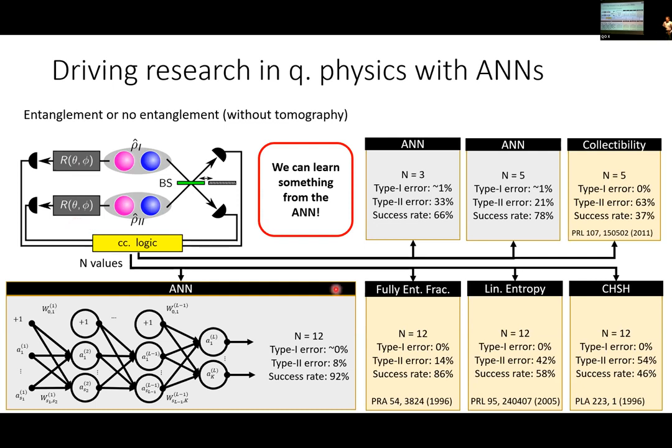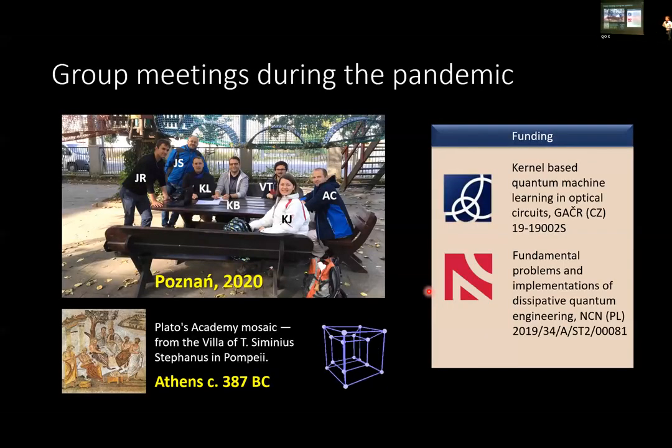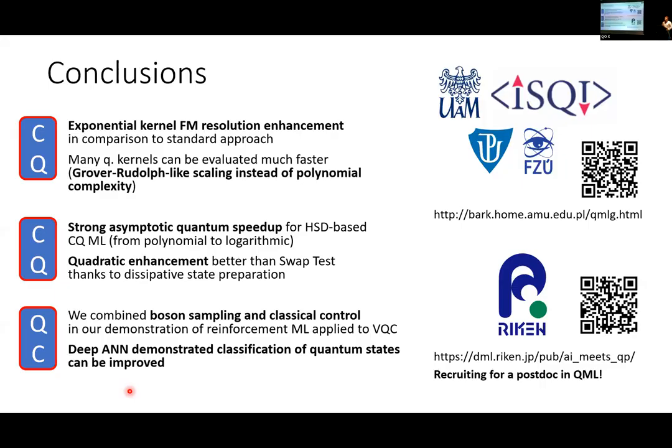You can ask a deep neural network what it thinks about whether there's entanglement or not. It turns out that the best proposed witnesses that we tested are outperformed quite significantly by artificial neural networks. There's still a place for improvement in our research if we feed neural networks with it, especially when the problem is very complex. Thank you for your attention.